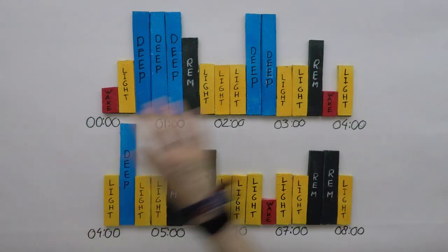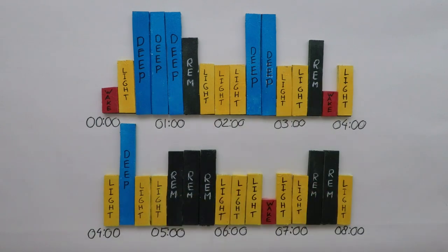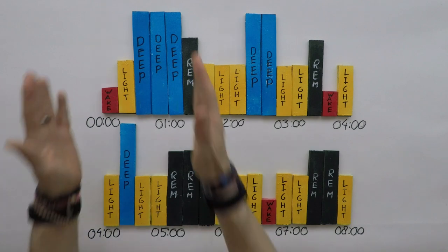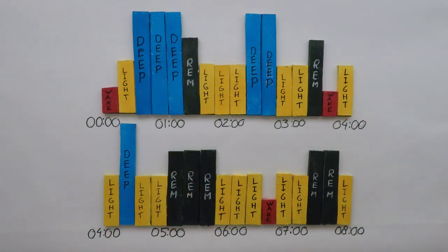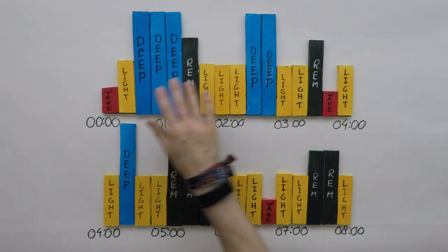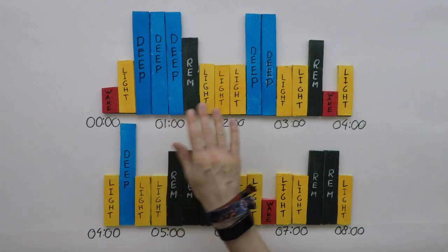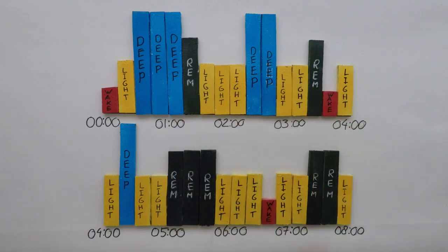Now we've drawn out a full night of sleep and we can clearly see the four distinct sleep cycles that all end in REM sleep — here's the first one, the second one, the third one and the fourth one. In the first half of the night the sleep cycles have most of your deep sleep, interspersed with light sleep and ending in relatively short REM periods. In the second half of the night the sleep cycles contain almost no more deep sleep and the REM periods increase in length.